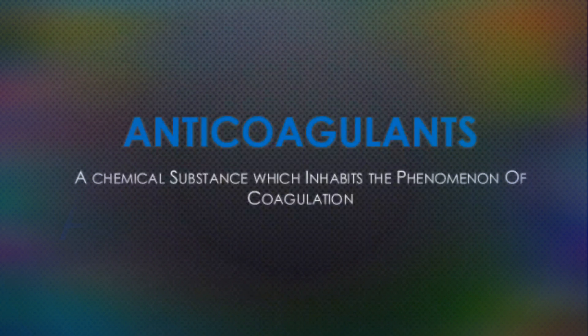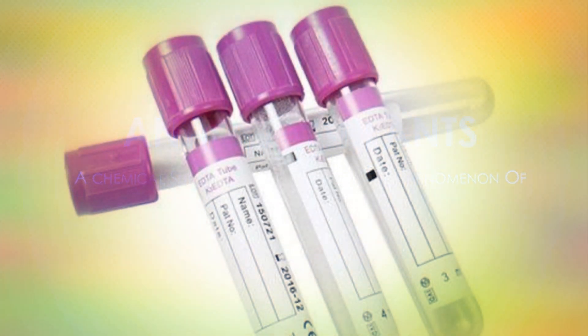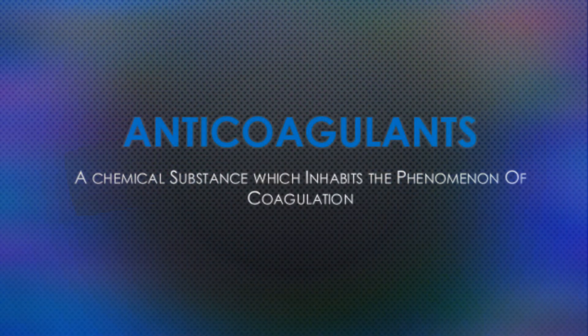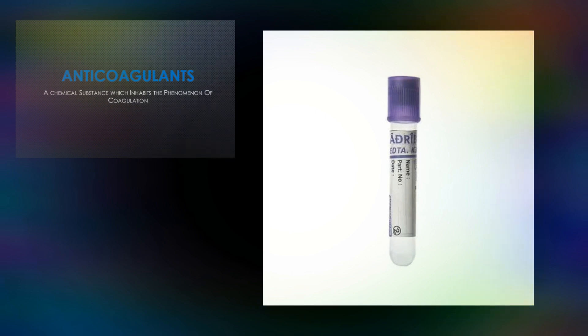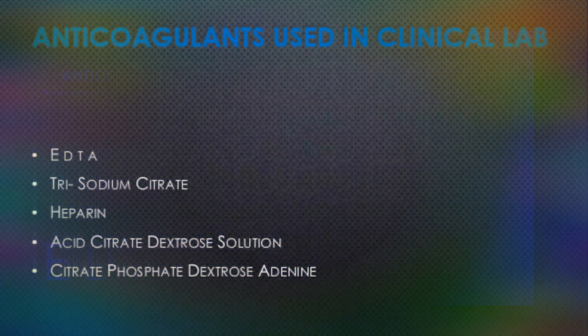Anticoagulants are chemical substances which inhibit the phenomenon of coagulation. Whenever we deal with different types of tests like complete blood count, prothrombin time, or activated partial thromboplastin time, these tests require anticoagulants. For example, CBC tubes have a lavender color and contain EDTA (ethylene diamine tetra-acetic acid), or we can use trisodium citrate for ESR tubes, heparin, or blood banking anticoagulants like acid citrate dextrose solution.